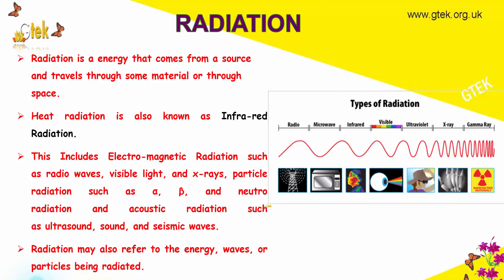Now let's move on to radiation. Radiation is energy that comes from a source and travels through some material or through space. Heat radiation is also known as infrared radiation. This includes electromagnetic radiation such as radio waves and visible light.